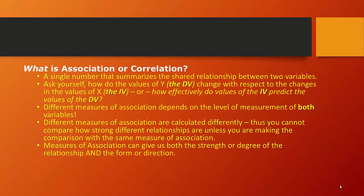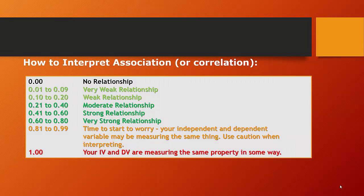Measures of association are going to give us both the strength or degree of the relationship, and if we have ordinal by ordinal level relationships, it'll also give us the directionality of the relationship. When we interpret a correlation coefficient, as a general rule of thumb you can use this table to develop an understanding of the strength of a relationship. A correlation coefficient is going to be a value that ranges from zero — no relationship between the two variables — to one, a perfect relationship.